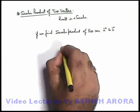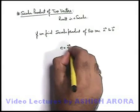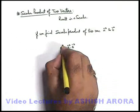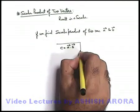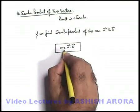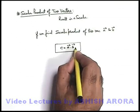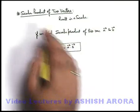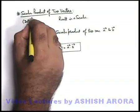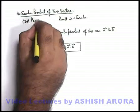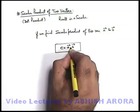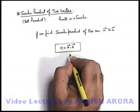The scalar product of two vectors A and B is written as C = A·B. This is the way we represent the scalar product and C is the result of the product of A and B vector. The scalar product is also written as dot product, represented by placing a dot between the symbols of the two vectors.